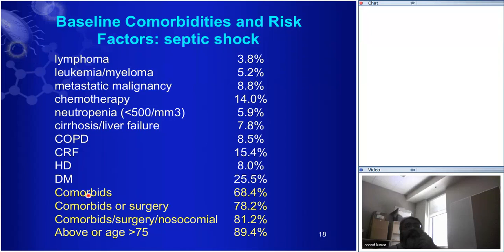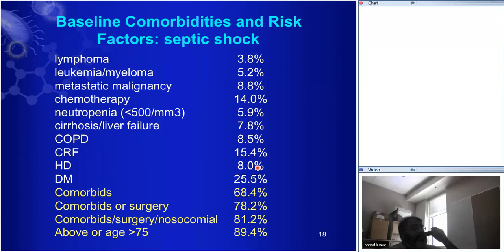If you add up all those comorbidities, that's about 70%; adding those who've had recent surgery or are otherwise nosocomial brings it to 80%; adding those 75 years or older at risk for resistant infections brings it to 90%. So 90% of patients with septic shock should be getting broad-spectrum therapy. And the people at the tip of the spear who really define the ceiling of outcome for septic shock survival don't always know that. The intensivist role is basically not to screw things up.